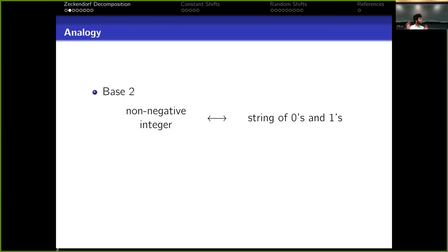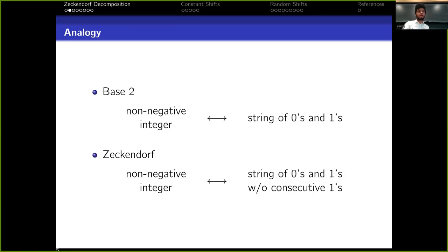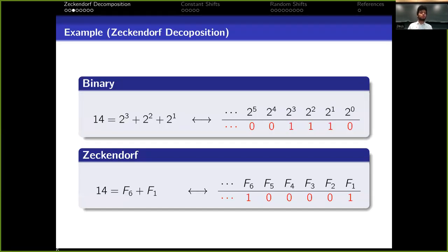And so that means that in base 2, we associate non-negative integers to strings of zeros and ones. While in Zeckendorf, we associate non-negative integers to a string of zeros and ones without consecutive ones. For example, 14 is 8 plus 4 plus 1, and that's why we write it as 1, 1, 1, 0 in base 2 with infinitely many zeros to the left. And 14 in Zeckendorf is going to be 13 plus 1, so F₆ plus F₁, and that's going to be 1, 0, 0, 0, 0, 1 with infinitely many zeros to the left.